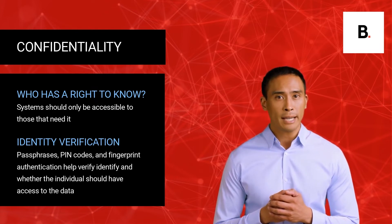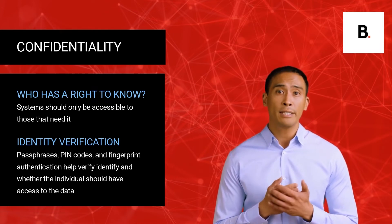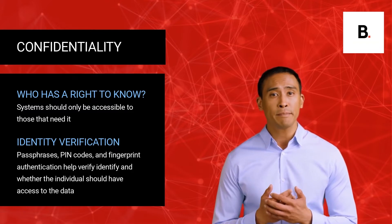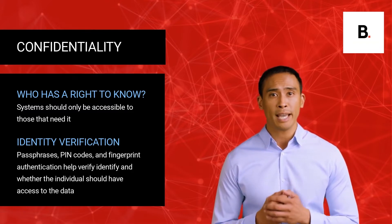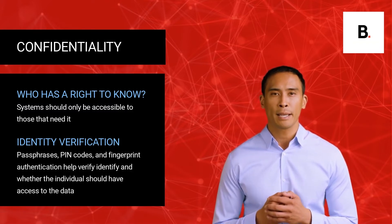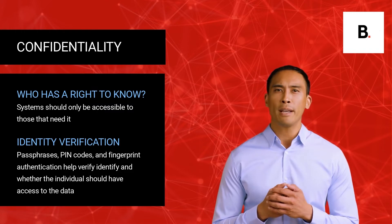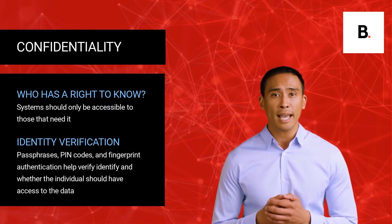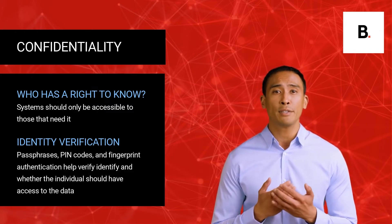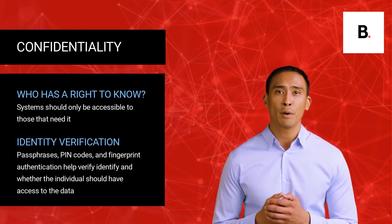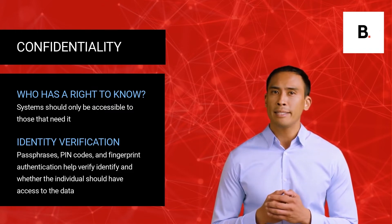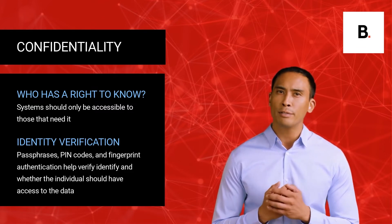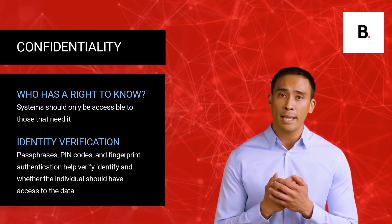Confidentiality in information technology is achieved in several ways. These include data classification and labeling, strong access controls and authentication mechanisms, encryption of data in transit and storage, remote wipe capabilities, and adequate training for all individuals with access to data.